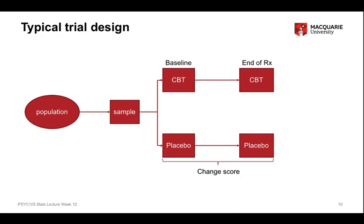Our trial design looks like this. We have a population that we're sampling from, which are individuals in a community setting suffering from some functional gastrointestinal disorder like IBS. From that population, we draw a random sample and randomly allocate people to either the active CBT arm or the placebo arm. We record the GSRS scores in both groups at baseline and at the end of treatment, and it's the change score — the difference between these pre- and post-scores — which forms our dependent variable.